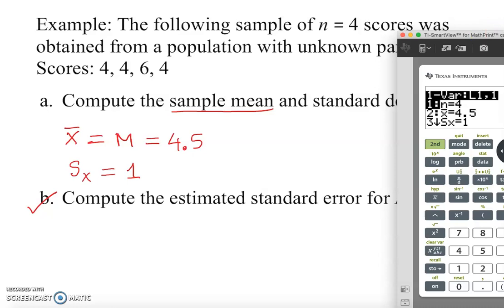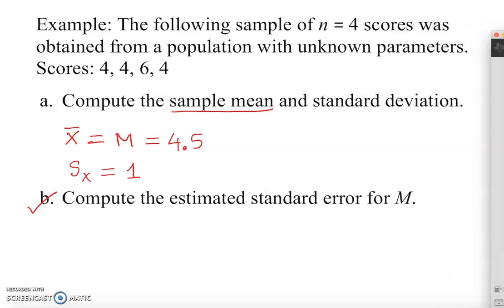So there is a formula for that one actually. There is a formula for this one. So estimated s sub M, estimated error of the mean. Remember, there are two forms of this formula actually: s over square root of n, and there is another formula I would like to introduce here, or similar another form, square root of s squared over n.